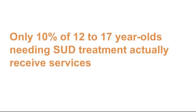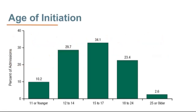Another SAMHSA survey shows that around 10% of 12-to-17-year-olds who need substance use treatment are actually receiving services — so we have a huge untreated population. Additional SAMHSA data showing the age of initiation shows a spike between ages 15 to 17. Interestingly, the age of initiation for folks 25 and older is actually the lowest bucket. This correlates with brain development — once individuals are beyond 26, the frontal lobe is really in charge and it's no longer the nucleus accumbens driving behavior.